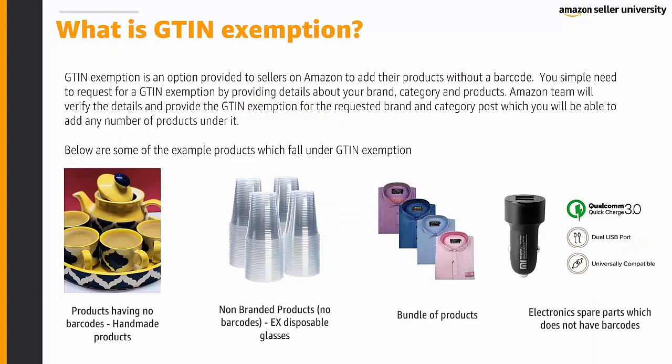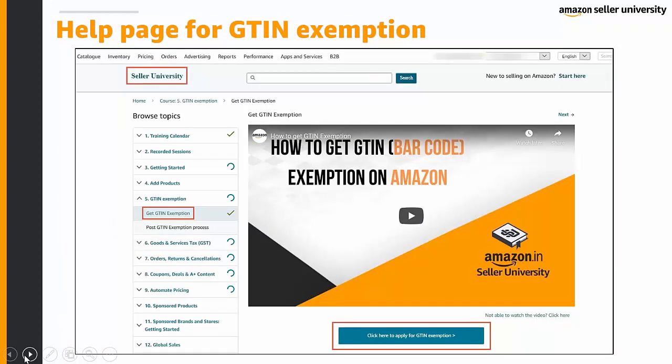GTIN exemption is an option provided to sellers on Amazon to add their products without a barcode. You simply need to request a GTIN exemption by providing details about your brand, category, and products. Amazon's team will verify the details and provide the GTIN exemption for the requested brand and category, after which you will be able to add any number of products under it. Example products that fall under GTIN exemption include handmade products, non-branded products, items with no barcodes such as disposable glasses, bundled products, and electronic spare parts without barcodes.